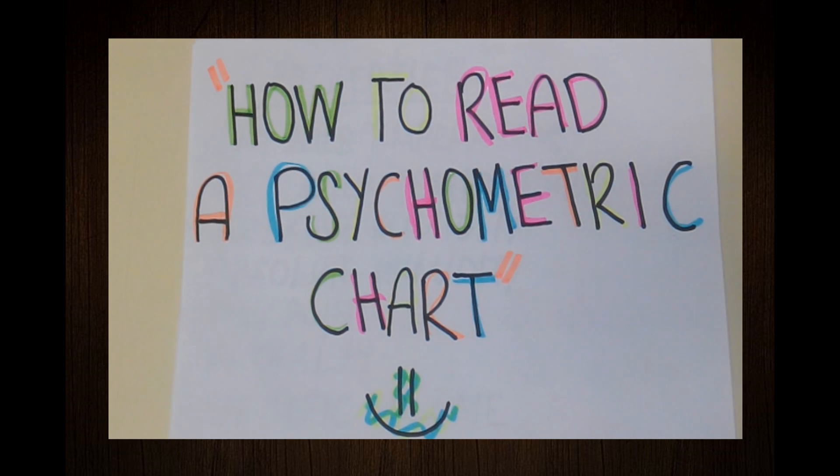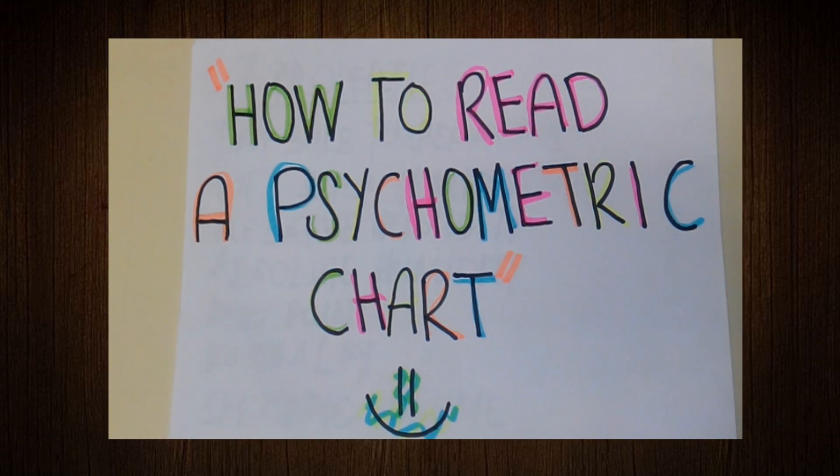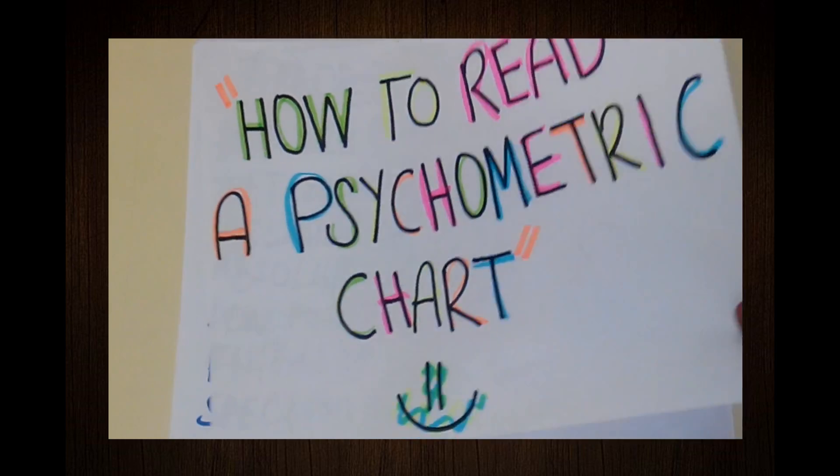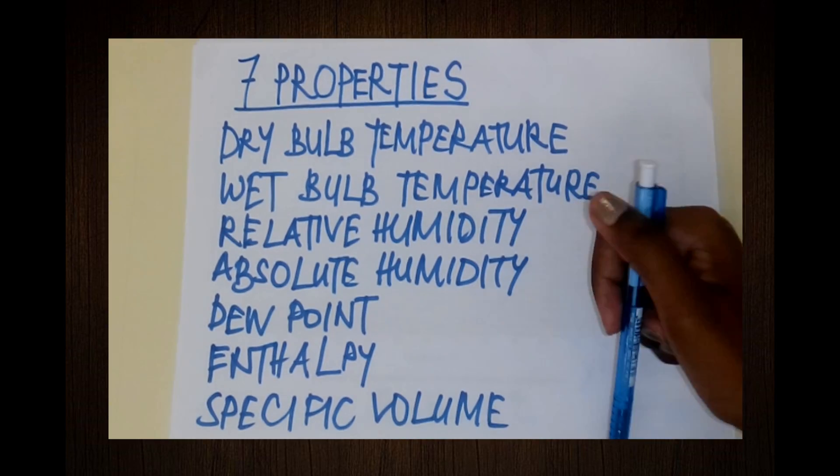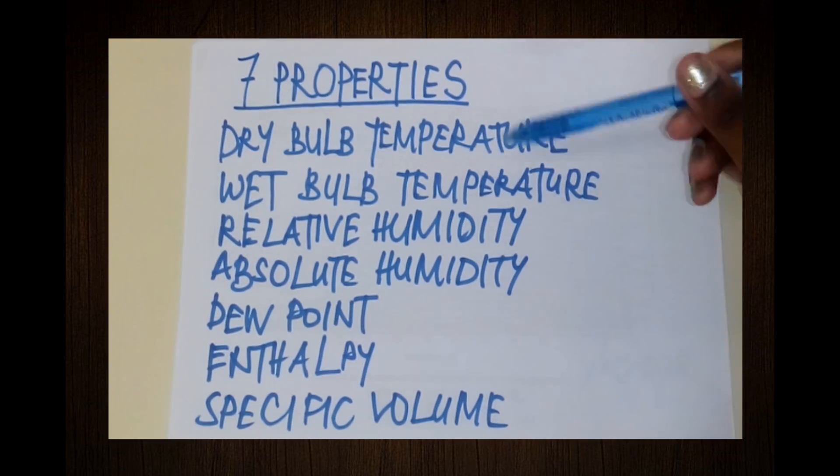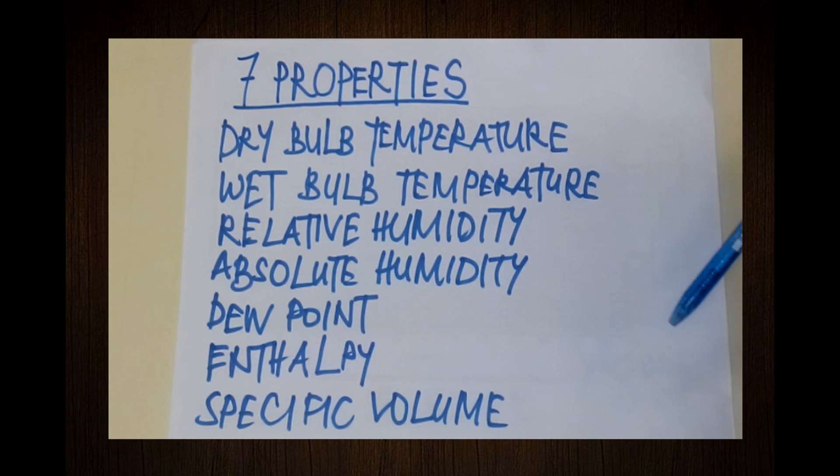Hi everyone, today we are talking about how to read a psychometric chart. The psychometric chart we are using is obtained from the Principles of Mass Transfer and Separation Processes by Binny K. Dutta. The first thing you need to know is that every point in the chart provides seven properties of water vapor mixture at the particular condition.